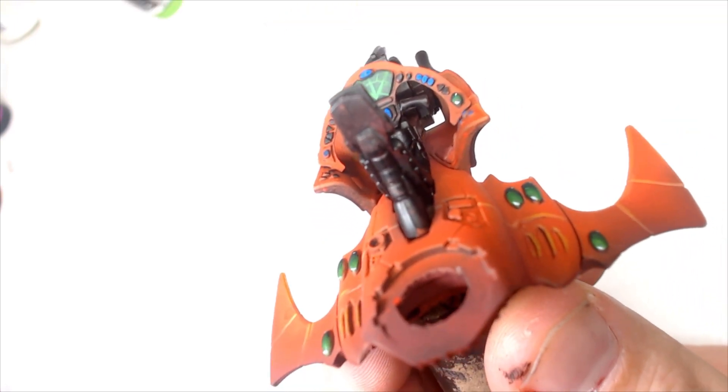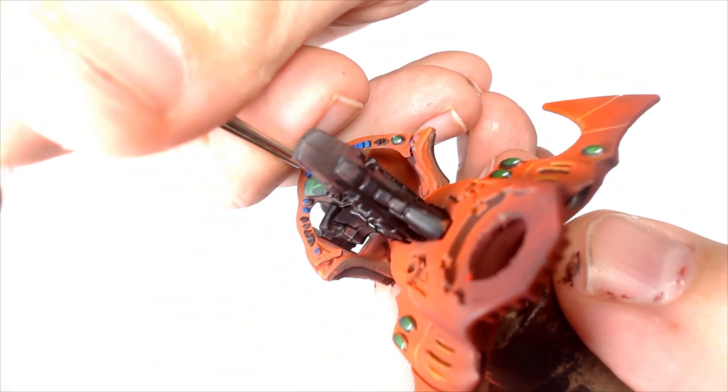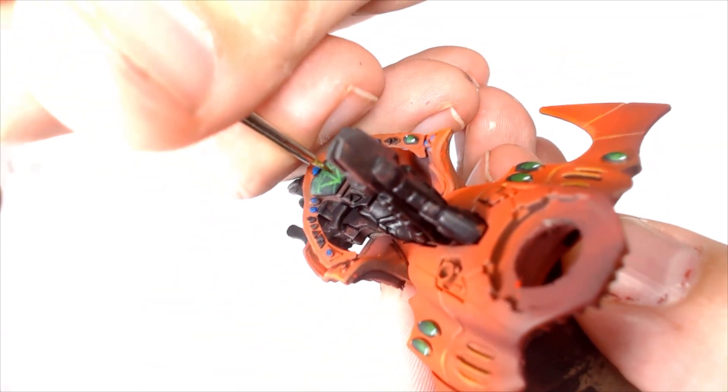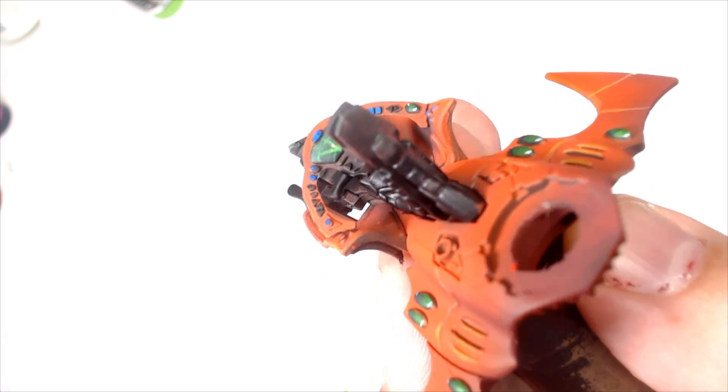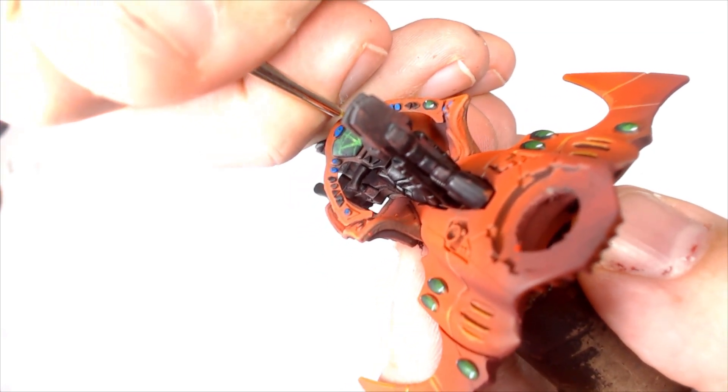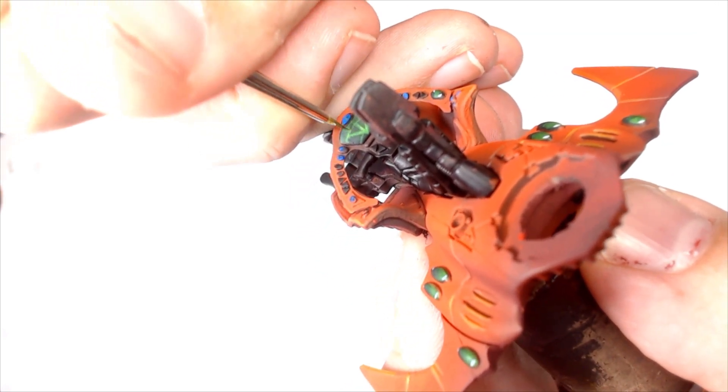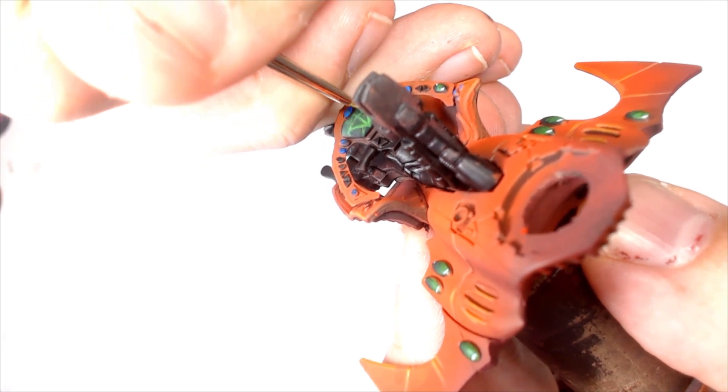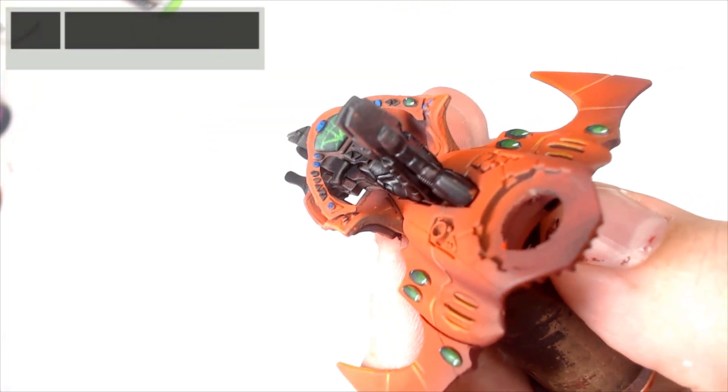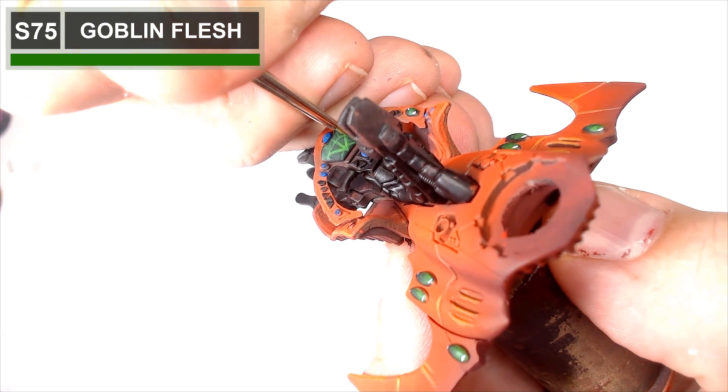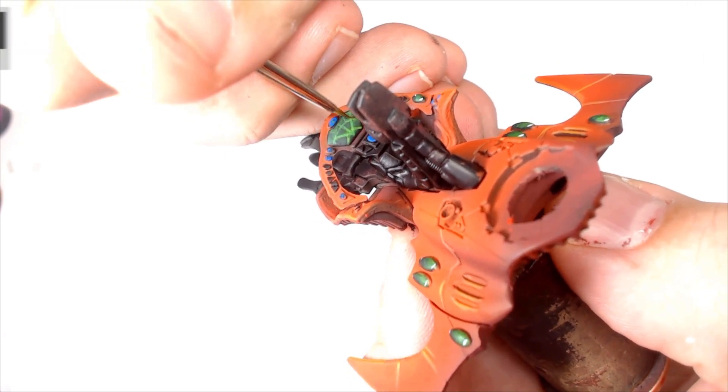If you use different thicknesses and different consistencies on it, then you will get a nice sort of in and out sort of fading scanner lines. So I'm just using the Goblin Flesh now, just for the final sort of highlight, just to bring everything up together, and you get a really cool effect.